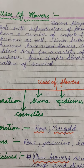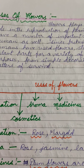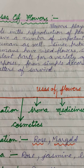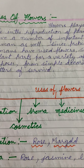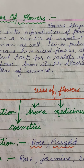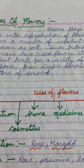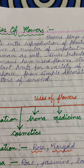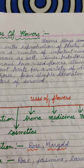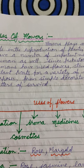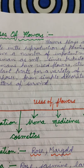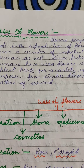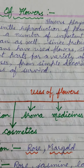Welcome learner to our science class. In our previous video we had learned about the effects of flowers. You know that flowers are an important gift of nature to us, which make us happy and cheerful. Flowers play an important role in the reproduction of plants, but they also have a number of important uses for human beings. From ancient times, humans have used flower stems and other plant parts for different purposes, from simple decoration to matters of survival.